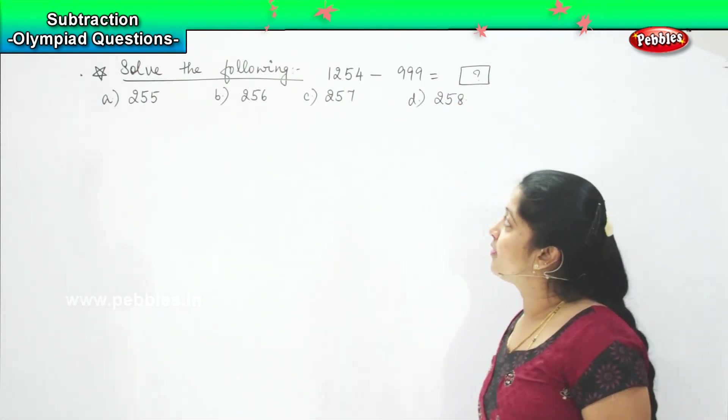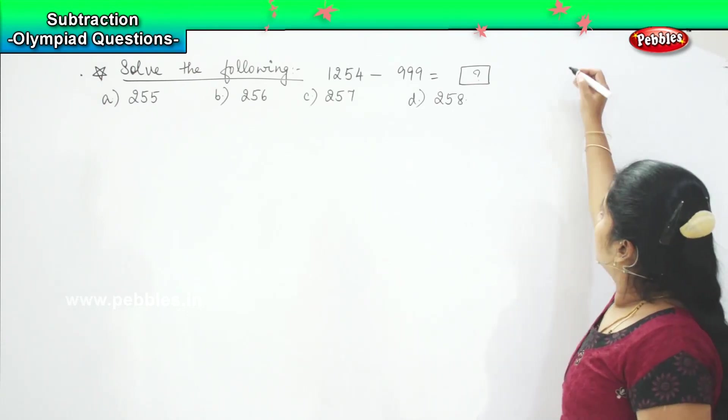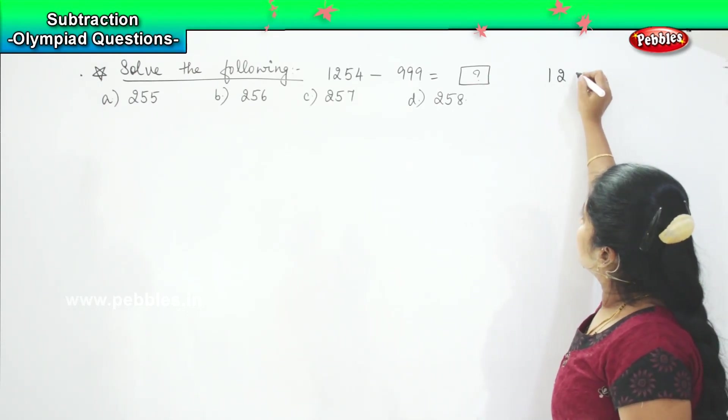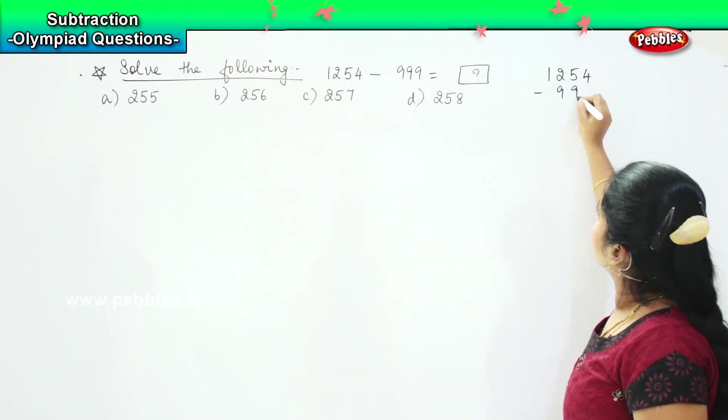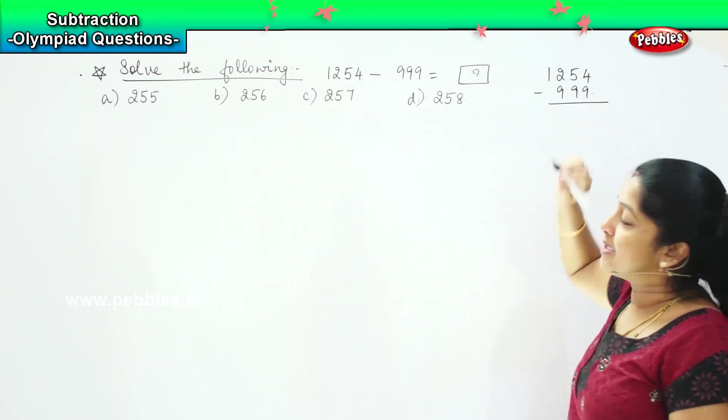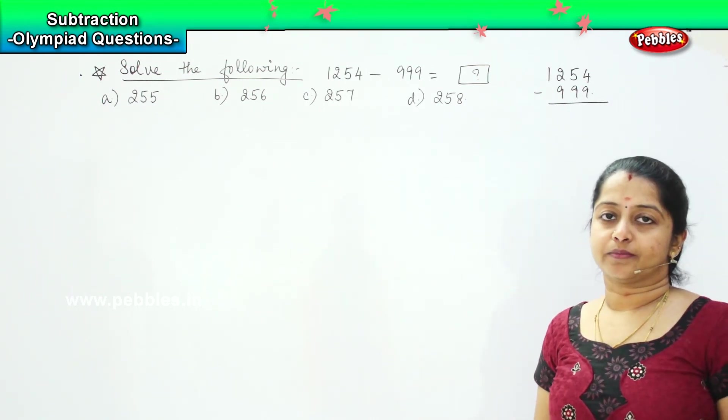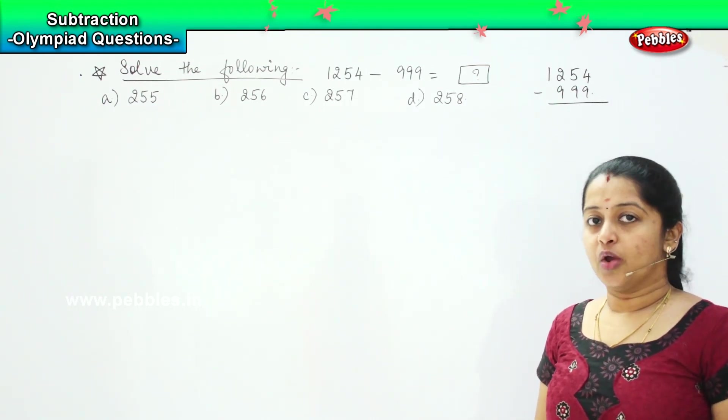So, which method is this, children? First, let us put it in the place value and see. 1254 minus 999. So, is it with regrouping or without regrouping? Very good, it is with regrouping.